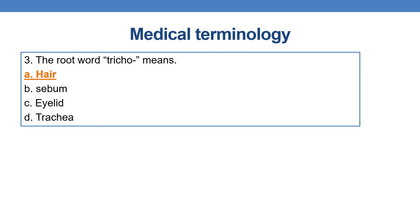The next question: the root word tricho means hair. Option A is the correct answer — tricho means hair.